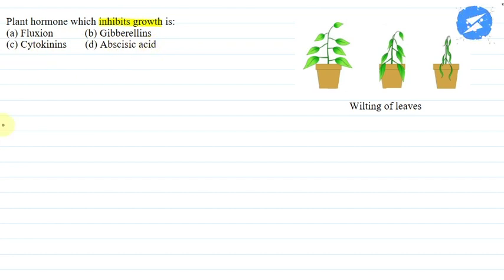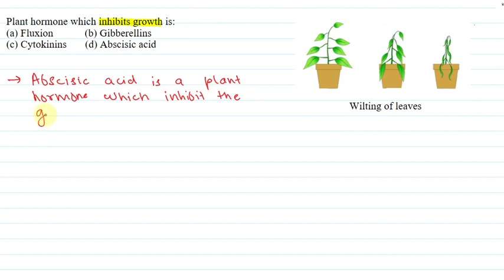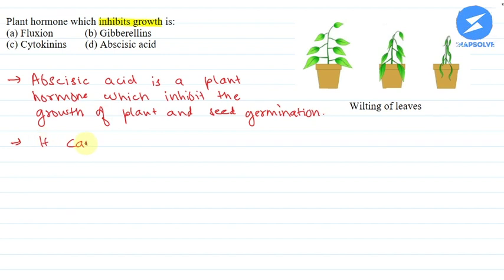So we will write here. Abscisic acid is a plant hormone which inhibits the growth of plant and seed germination. It causes wilting of leaves.